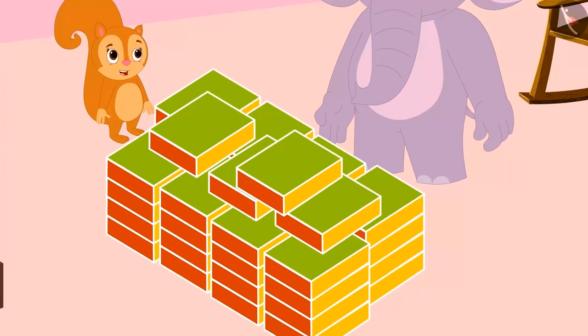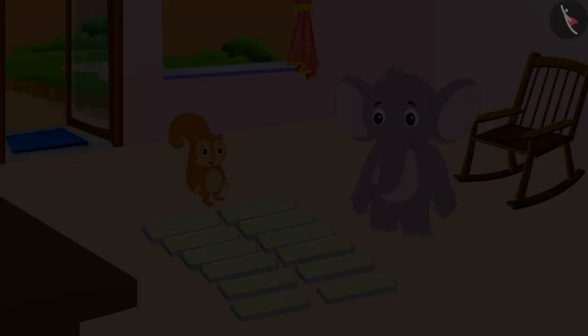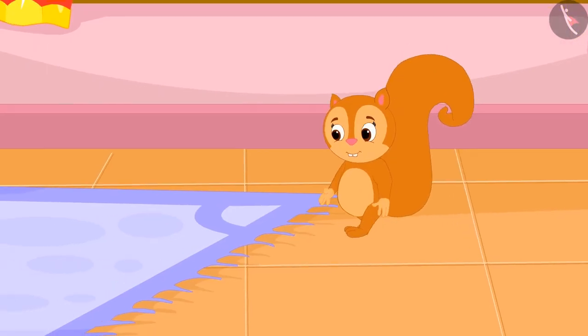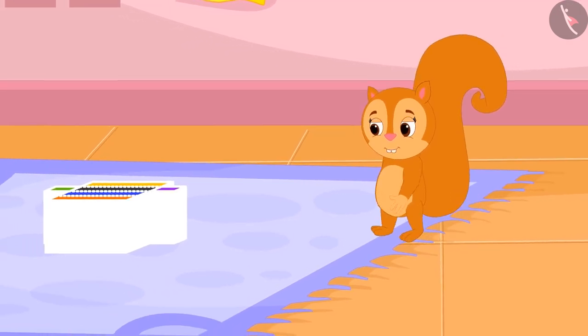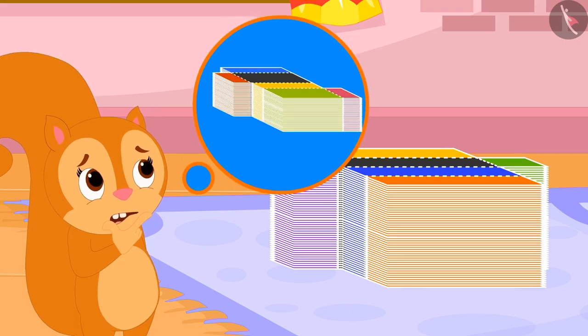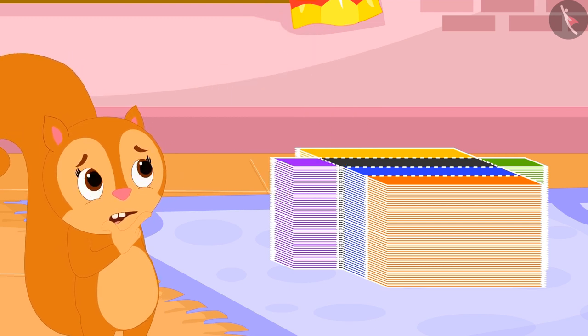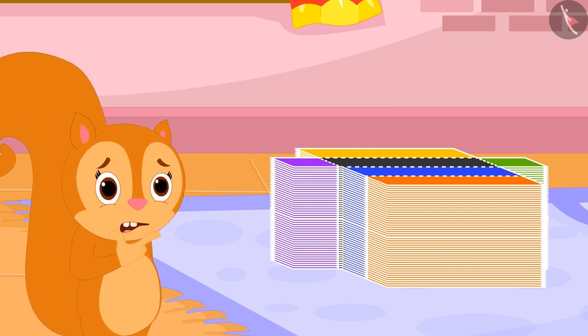Chanda and Appu packed all the laddus. Now Appu wants to pack cashew cutli. Chanda now saw cutouts of cashew cutli boxes, which look different from the cutouts of laddus boxes. Chanda is wondering if these cutouts will make boxes.